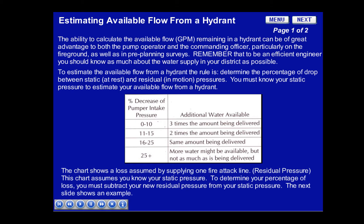The chart shows a loss assumed by supplying one fire attack line, which will mean your residual pressure. This chart assumes you already know your static pressure. To determine your percentage of loss, you must subtract your residual pressure from your original static pressure. The next slide shows an example.